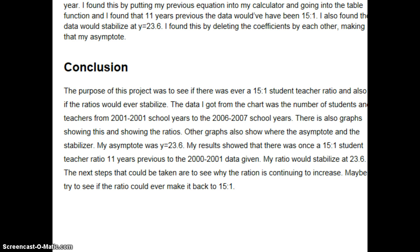After putting the information given to me — from the years 2000-2001 all the way up to 2007, including the number of students and the number of teachers — into an Excel spreadsheet, my first graph was the number of students in Nevada compared to how many years. I found this by highlighting both columns and turning them into a scatter plot. This graph shows the number of students in Nevada in each year after 1999. On this graph you would also put in the equation, find a trend line, and label the axes. This graph uses a polynomial trend line.